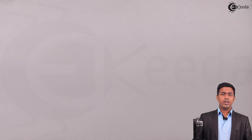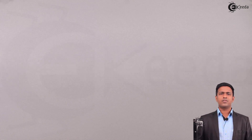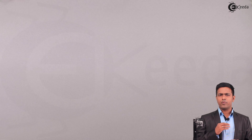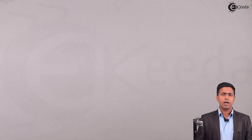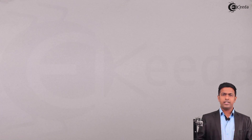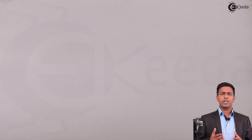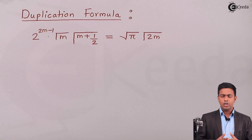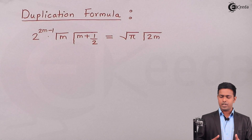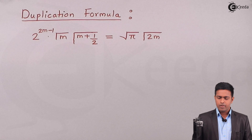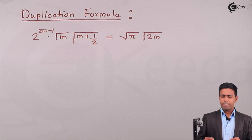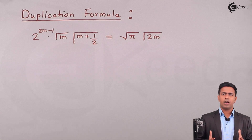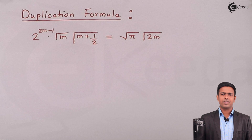Here we are going to learn the most important topic of beta and gamma function which is called the duplication formula. The duplication formula is very important in solving multiple numericals of beta and gamma function. We'll see what the duplication formula is and how to derive it. The formula says 2 raised to 2m minus 1, gamma m, gamma m plus half equals root pi times gamma 2m. This formula is derived from the beta function.